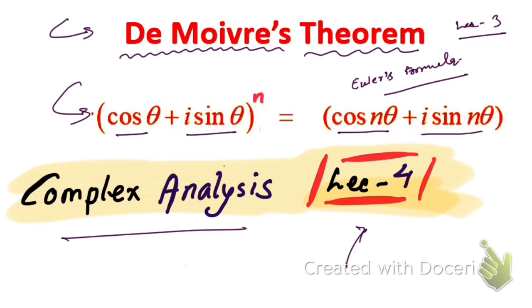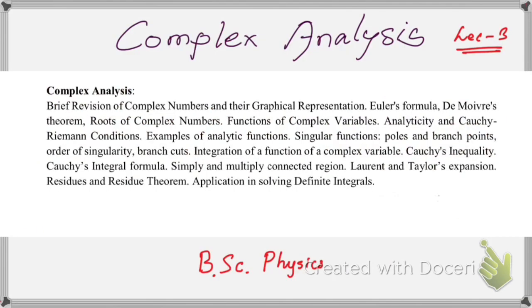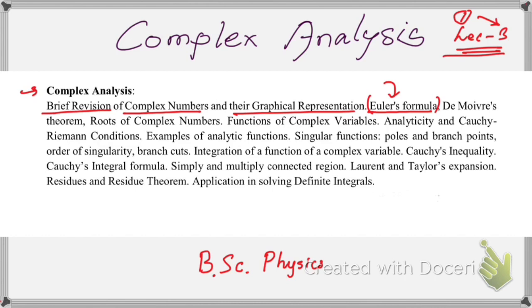So far in complex analysis, we have discussed a brief revision of complex numbers — what a complex number means and their graphical representation, how to find modulus and argument, and we have also discussed Euler's formula in lecture number 3. From lectures 1, 2, and 3, we have discussed these topics.